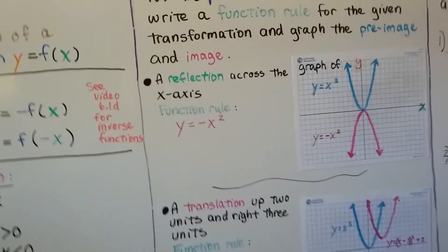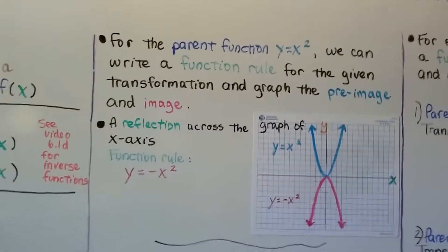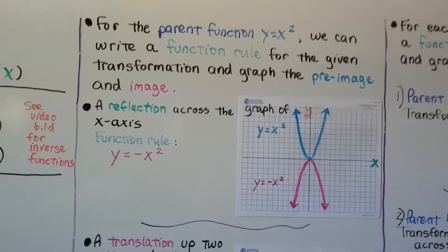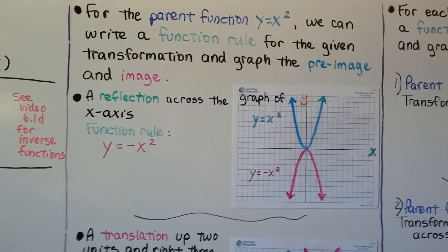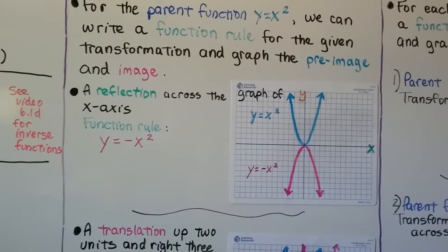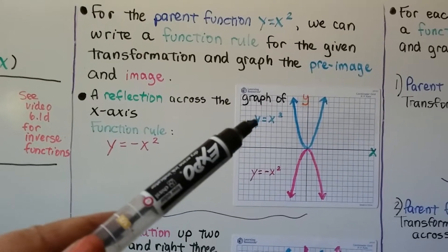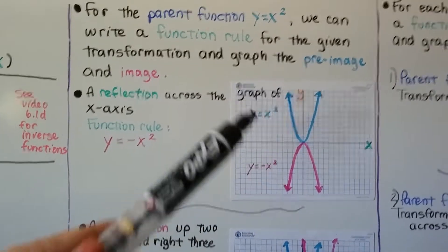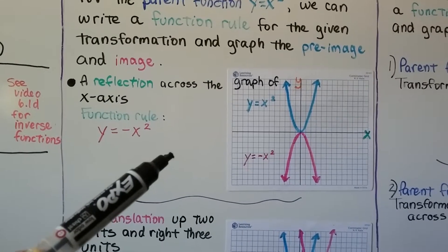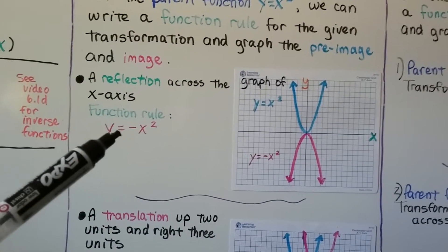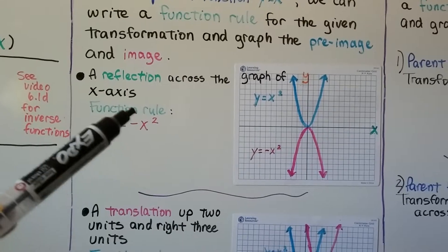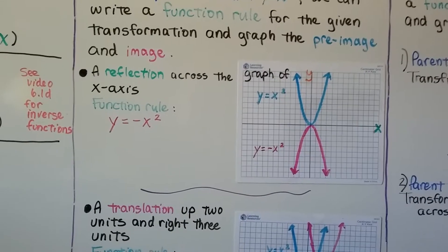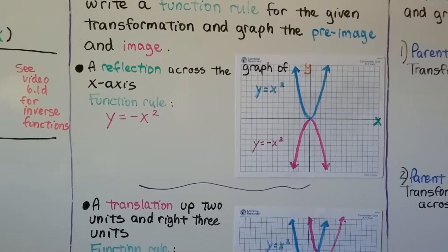For the parent function y equals x squared, we can write a function rule for the given transformation and graph the preimage and the image. When the parent function is y equals x squared, that would be this blue line. And the reflection across the x-axis, we would have y equals negative x squared for the function rule. It would be this pink line, pink graph.